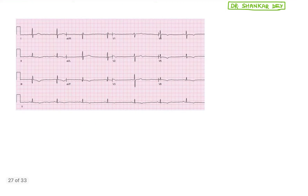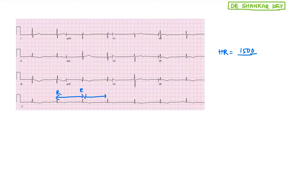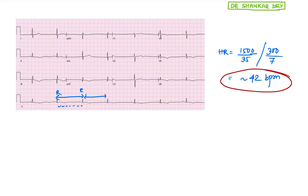Now see the next ECG. In this case, the distance between two R waves is prolonged — very high. So this is an ECG of bradycardia. Calculating the heart rate: 1500 / number of small squares, or 300 / number of large squares. In this case, large squares between two R waves: 1, 2, 3, 4, 5, 6, 7 — so 7 large squares, or 35 small squares. The heart rate is therefore approximately 300 / 7 ≈ 42 beats per minute. Whenever the heart rate is less than 60 beats per minute, that is called bradycardia.